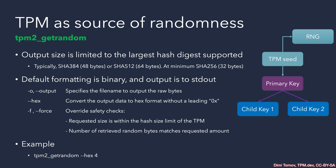Of course, there is a catch. At once, TPM2_GetRandom can provide only as much as the largest supported hash digest. Back in the day, this was 32 bytes because of SHA-256. Nowadays, we have TPMs that support up to SHA-512, so we get 64 bytes at once. And we can make multiple calls to the TPM's random number generator and get as many bytes as we need.